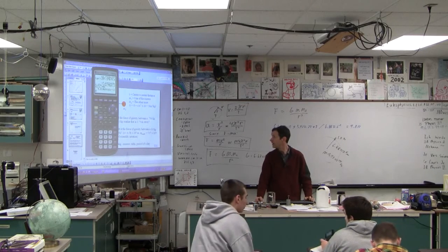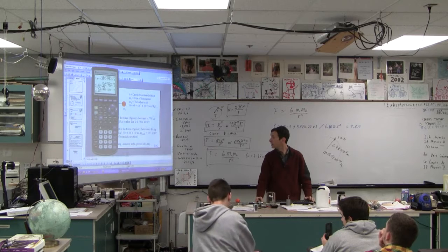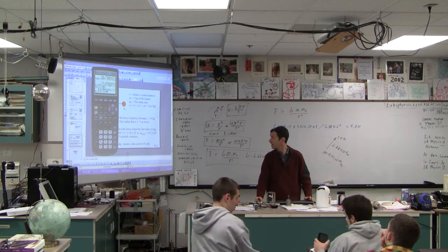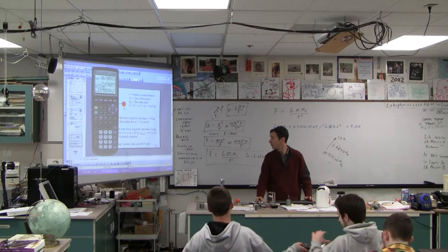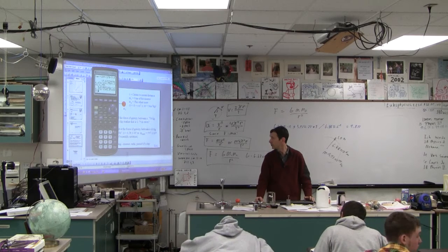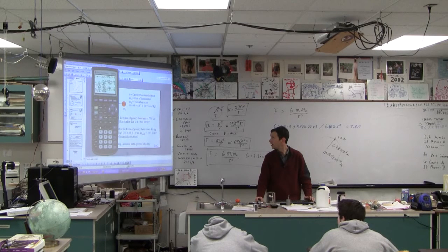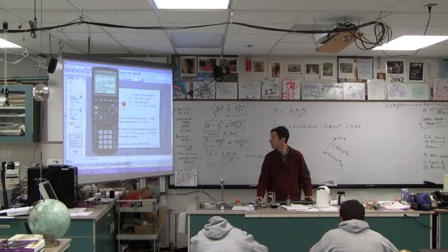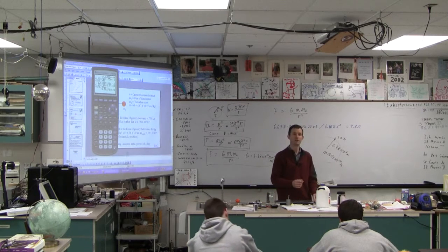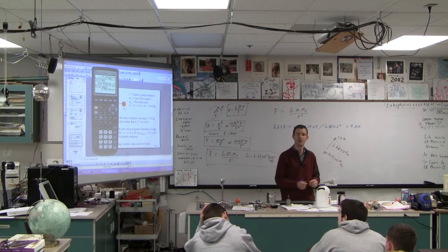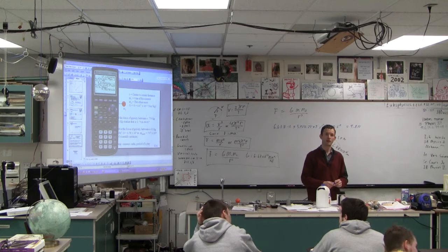So, second, not second, right? So 6.67 E minus 11 times 5.97 E24 times 1, don't forget to multiply by 1, divided by 6.38 E6 squared. I've done it twice. If you haven't done it once, you're a slacker and I hate you. Oh, was that out loud? I don't hate you. I love you if you're trying. If you haven't tried yet, I hate you.